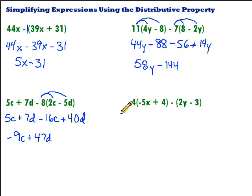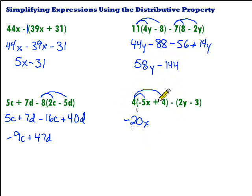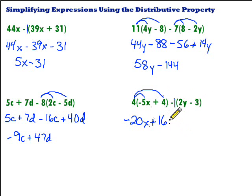Let's look at this last one. Again, we have two sets of parentheses, so we'll apply the distributive property twice. On this first one, we have a 4. We multiply 4 by negative 5x to get negative 20x, and 4 times positive 4 gives us plus 16. Then we've got a minus sign — if it's just a minus sign, we call that a minus 1. We distribute minus 1 through each piece inside the second parentheses. Minus 1 times 2y is negative 2y.